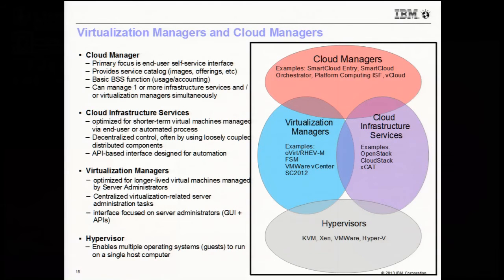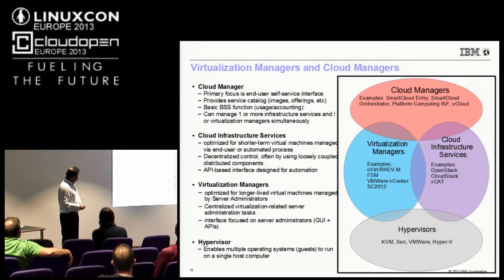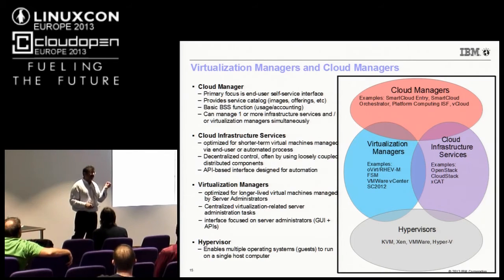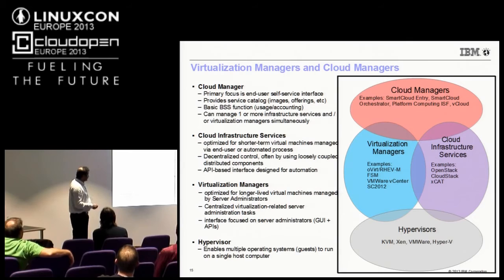I want to categorize the different types of management solutions available today for KVM. At the bottom you have the different hypervisors. In the inner circle you have what we call data center virtualization managers — optimized for longer-living virtual machines, pretty much centralized, with focus on a centralized API or GUI. Examples include vCenter from VMware, System Center 2012 from Microsoft for Hyper-V, and for KVM it's typically oVirt — the upstream project — with RHEV being the product from Red Hat.